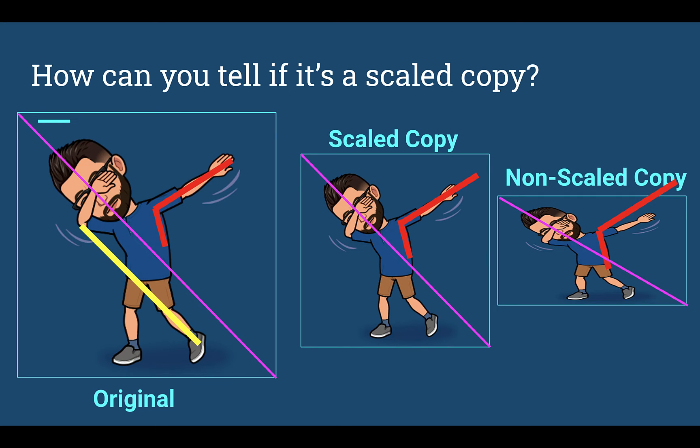If I were to compare a line that goes from an elbow down through one of the legs, and then I look at the scale copy, it still goes from the elbow down straight through that leg.